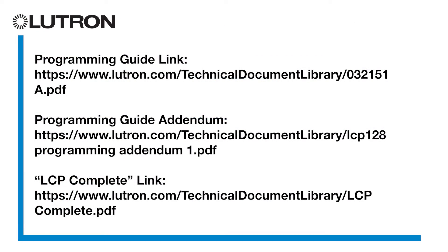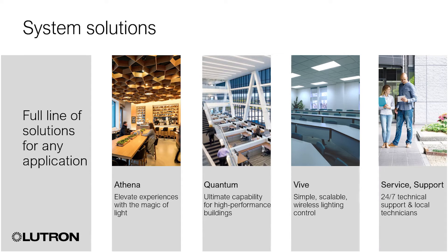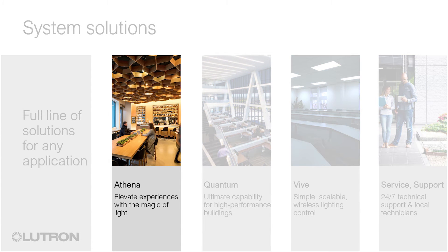The LCP and XPS systems we just covered are just one of several commercial systems offered by Lutron. Additional information on the LCP and XPS systems can be found at the links on screen. Lutron also offers several other lighting control systems for new and existing installations. Athena is a dynamic lighting control system that brings the magic of light to elevate everyday moments — a flexible, simple, all-in-one solution combining Ketra, the world's most advanced light source, with intelligent shades and connected apps to deliver a holistic light experience.